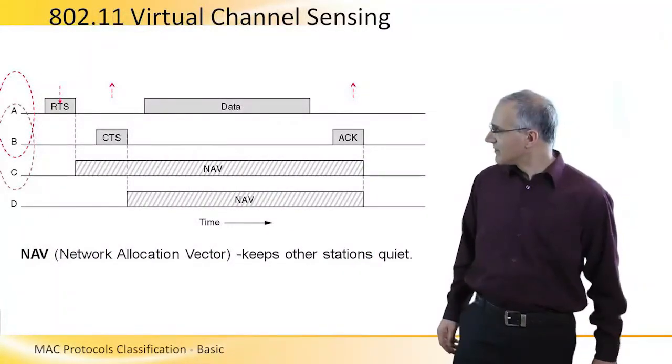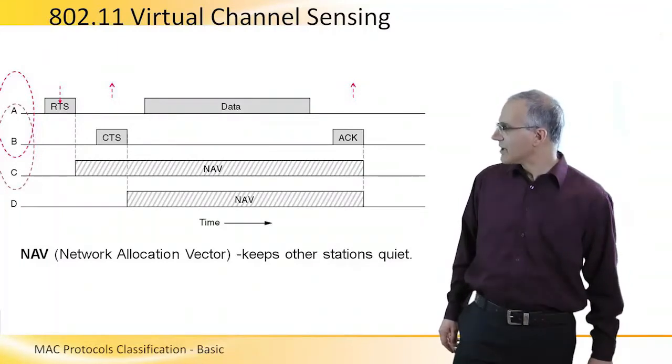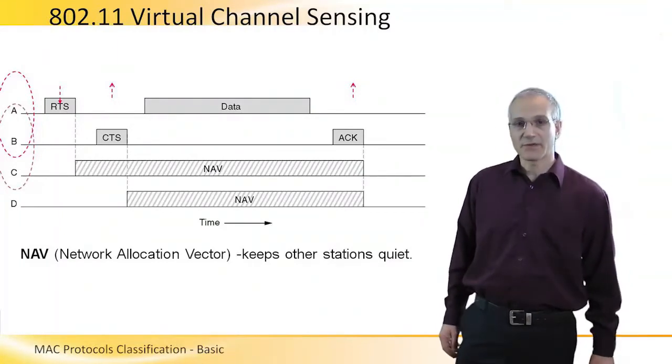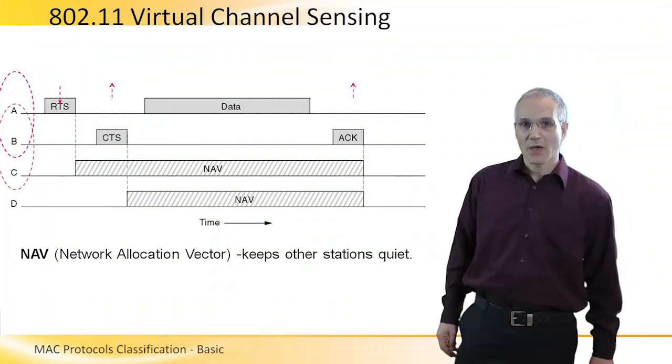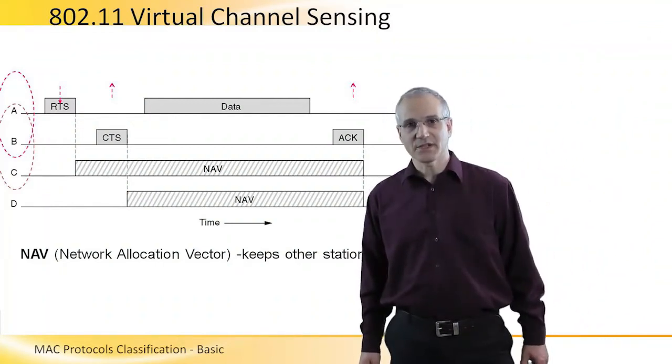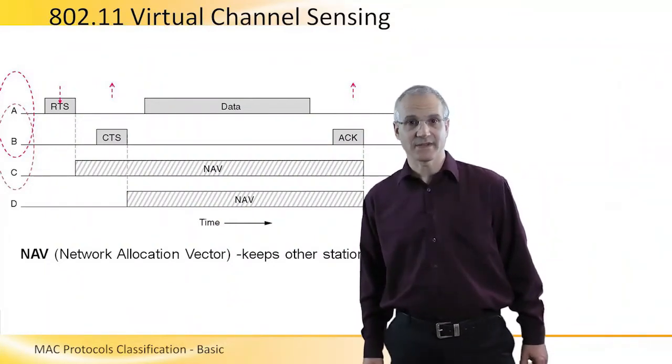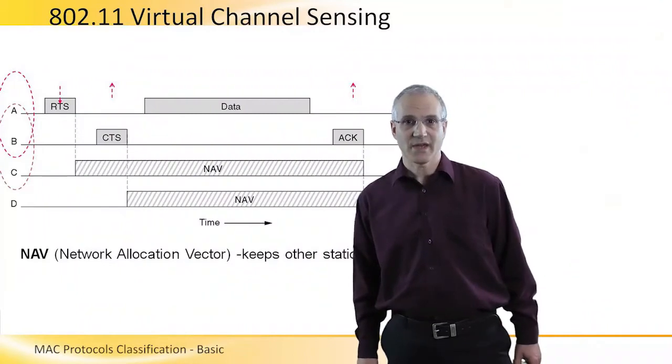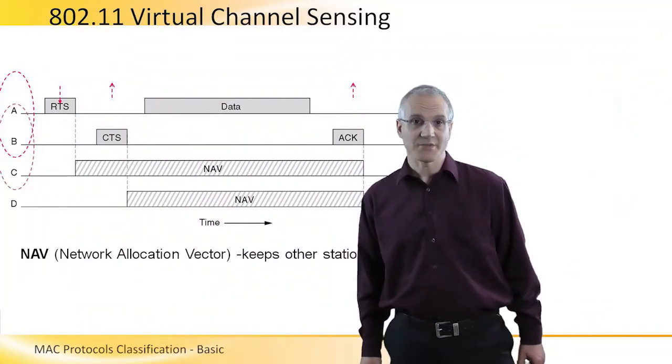The 802.11 virtual channel sensing mode comes to solve the hidden terminal problem. When terminal A senses the channel is idle, it starts transmitting an RTS, request to send signal. This is a short signal that tells everybody, I captured the channel.